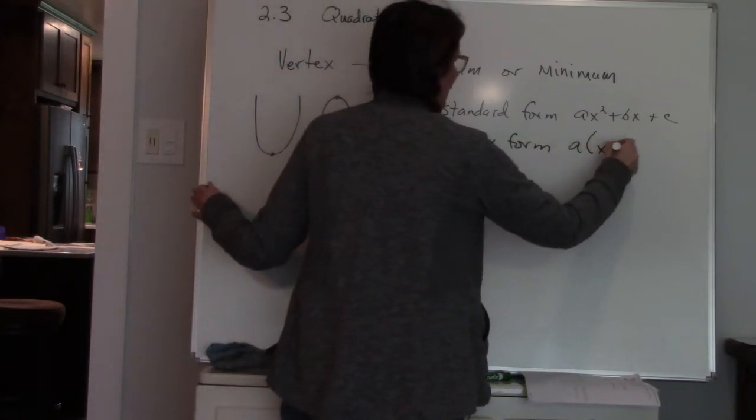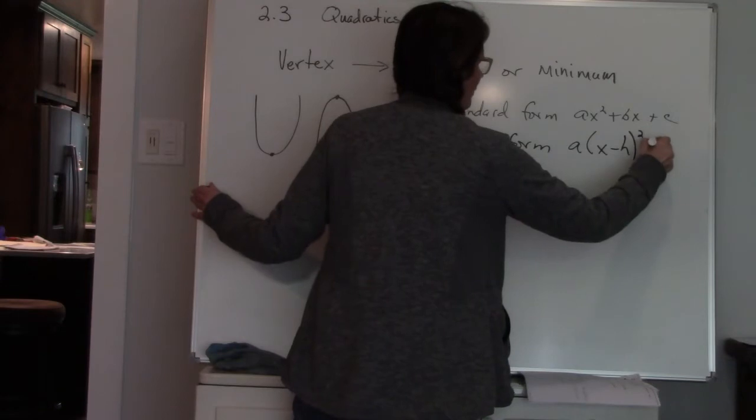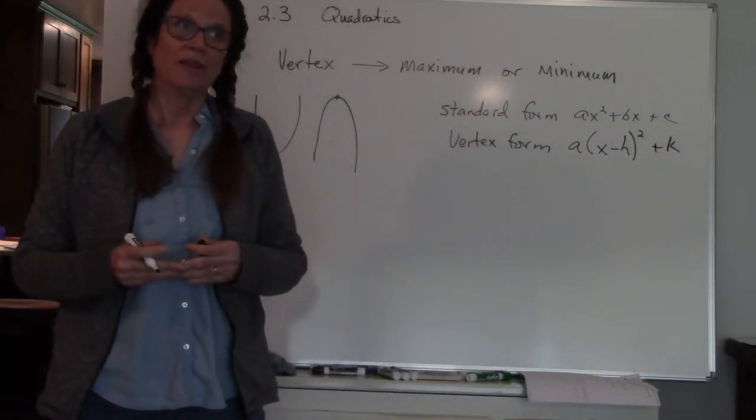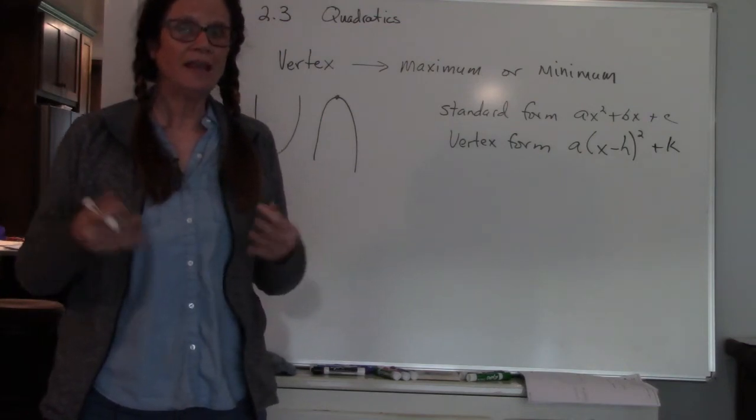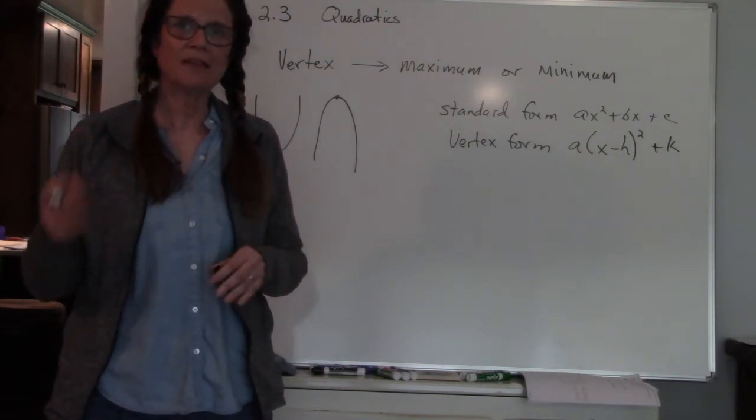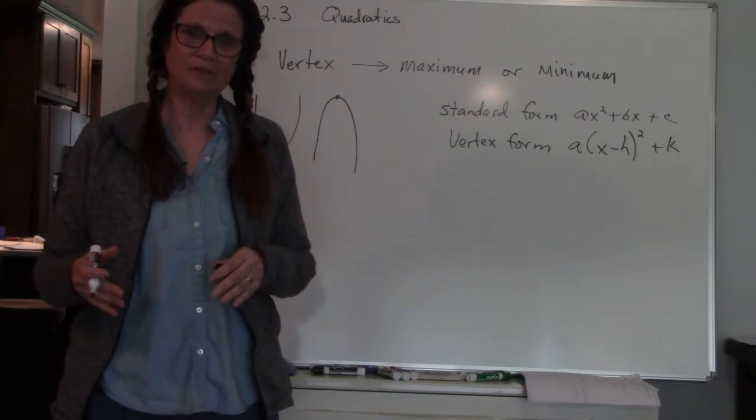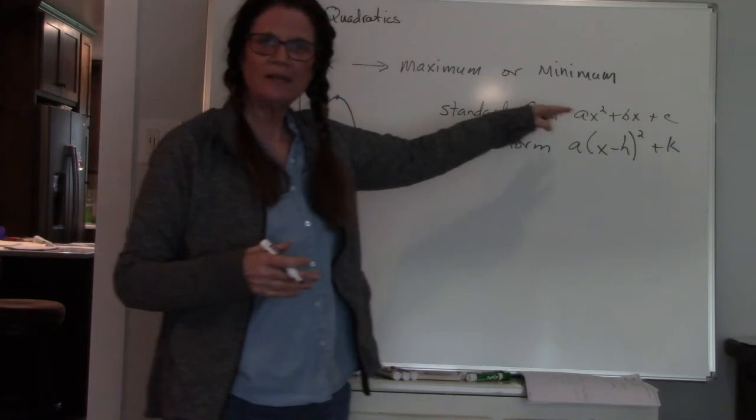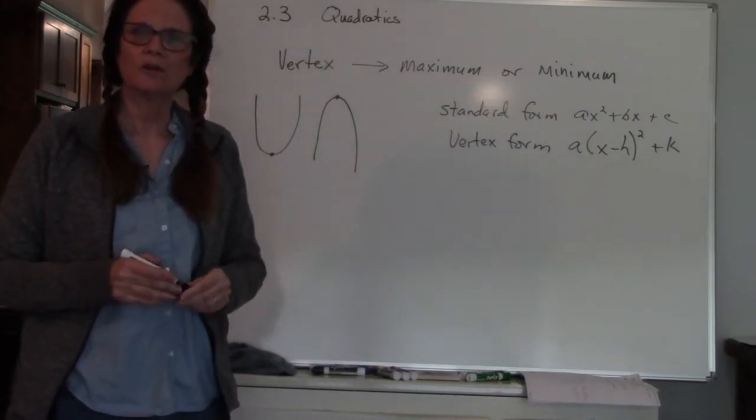That one is a times (x minus h) squared plus k. So the h and the k are really important—that is your vertex. The h represents the x value and the k represents the y value. It's the same thing if I were to multiply all this out; I would end up getting a standard form quadratic.